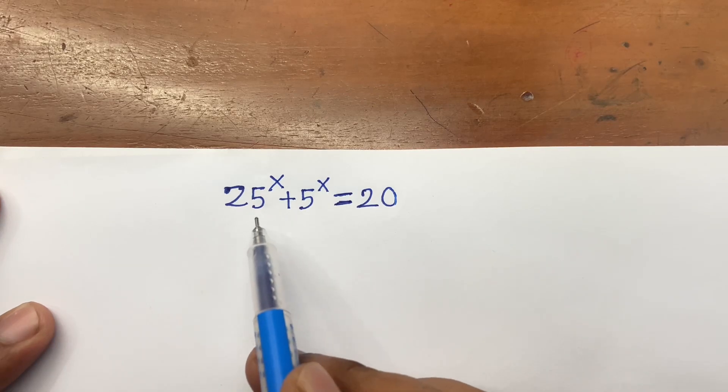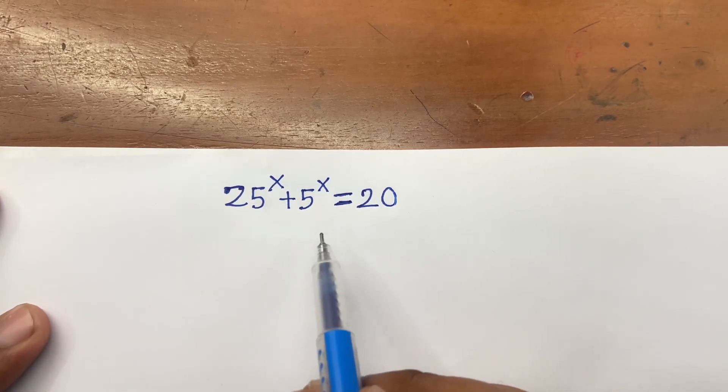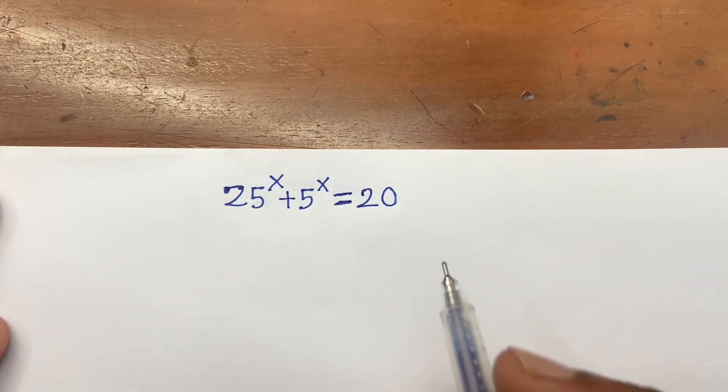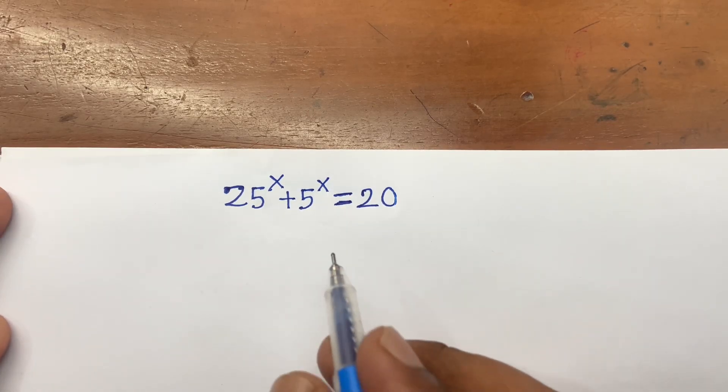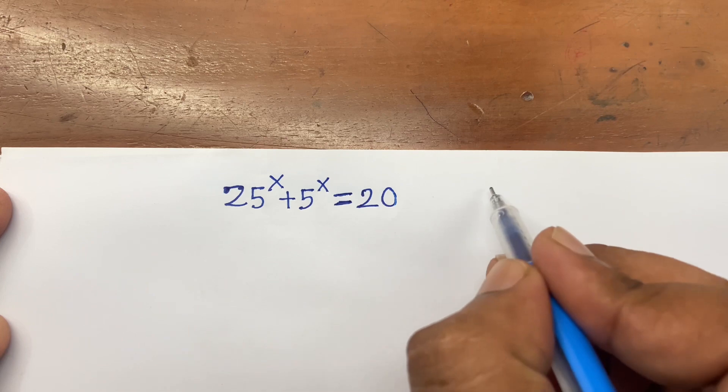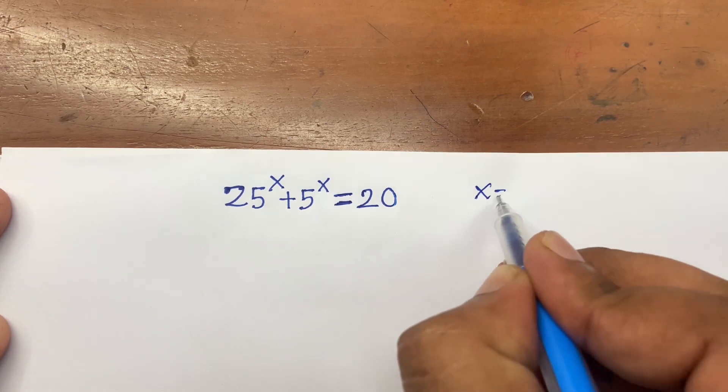Hello everyone. How to solve 25 power x plus 5 power x is equal to 20 — find the value of x.